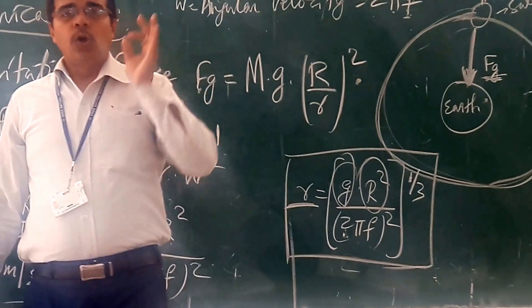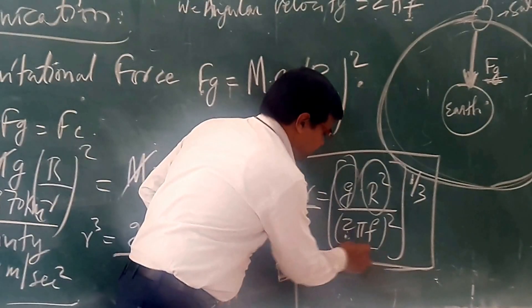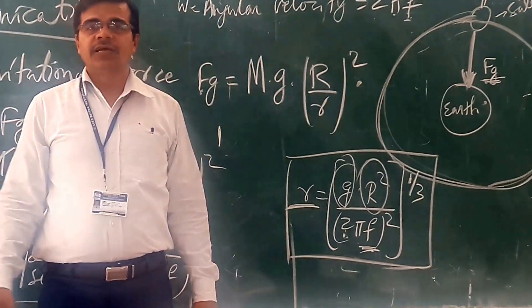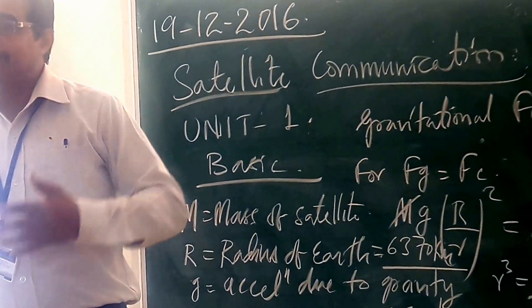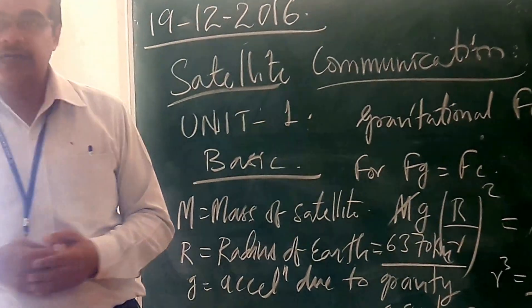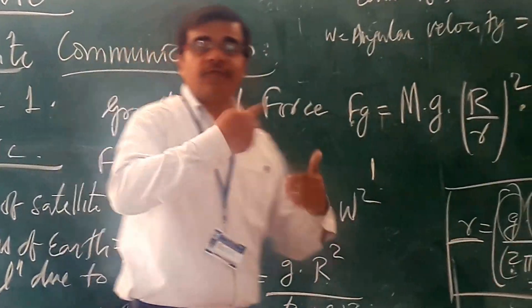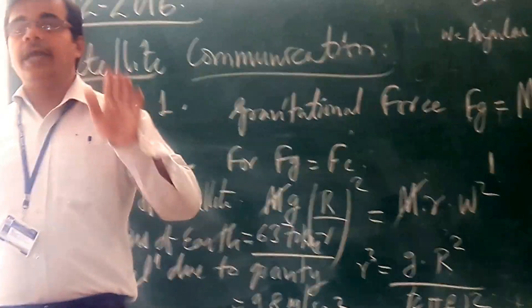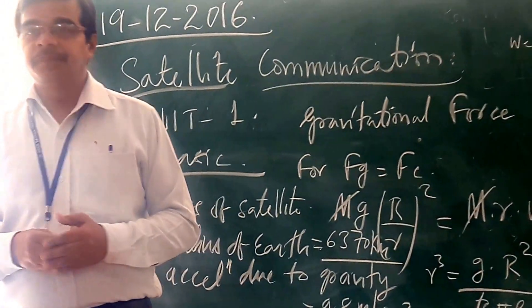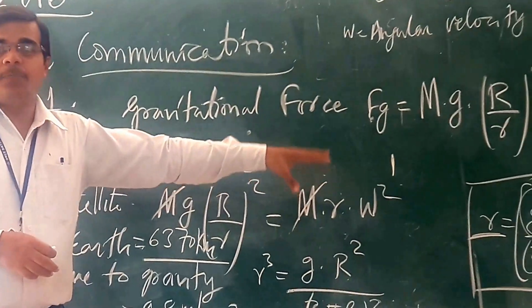It depends only on frequency. So what should be the distance of the satellite from the Earth? It depends upon the frequency of rotation of the satellite. It does not depend on any other parameter. This is one of the important conclusions.